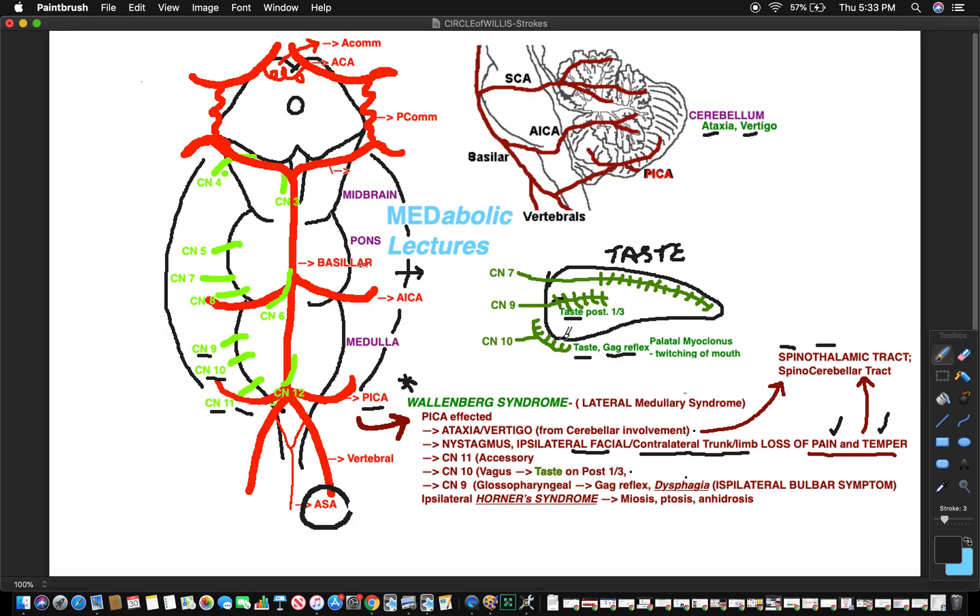If you have stroke of the PICA, which by the way is one of the most common stroke syndromes, it's called Wallenberg syndrome. You basically get - remember the mnemonic: don't PICA horse that can't eat and is walking into walls in Vegas. If that mnemonic can help you great, it helped me.